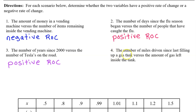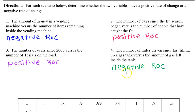Number four: the number of miles driven since last filling up a gas tank versus the amount of gas left inside the tank. These quantities will have a negative rate of change. As the number of miles driven increases, the amount of gas left in the tank decreases.